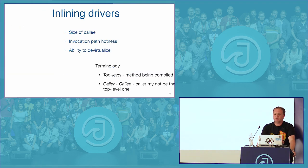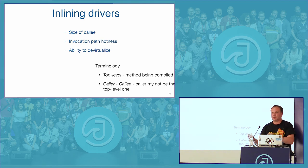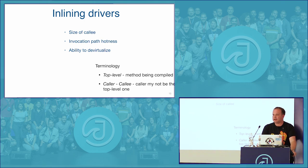What drives inlining? The top-level method is the one scheduled for compilation. There is always a pair of caller and callee — the caller calls, the callee is the one being called. The JIT compiler first looks at the size of the callee. Older compilers like C2 do this very roughly — they look at the bytecode size, sum them together, and decide whether inlining is worthwhile. More modern compilers like Falcon or Graal look at the size of the IR, the intermediate representation, which is more efficient.